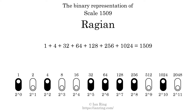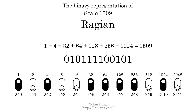That is why the scale number, in decimal, is 1509. The scale number not only enumerates the scale with a unique index, but it also literally describes the tonal content of the scale, represented as a binary number in base 2.